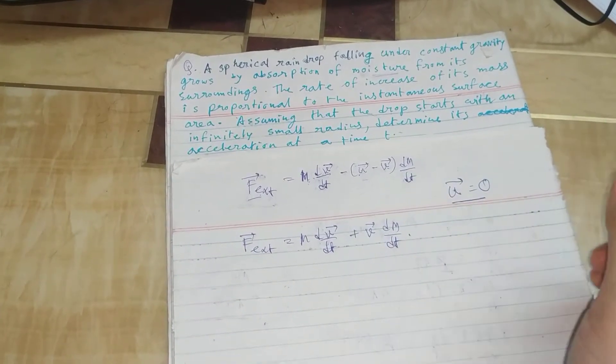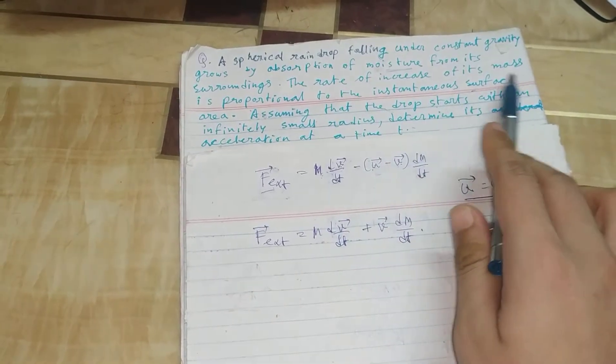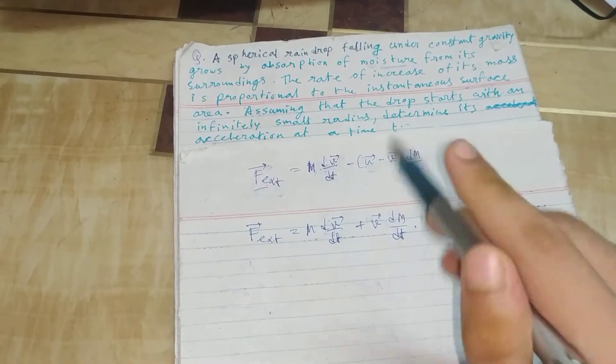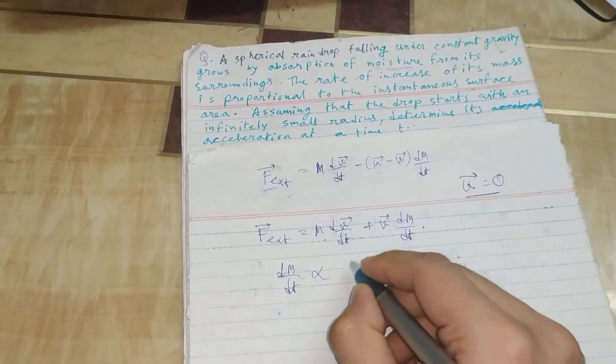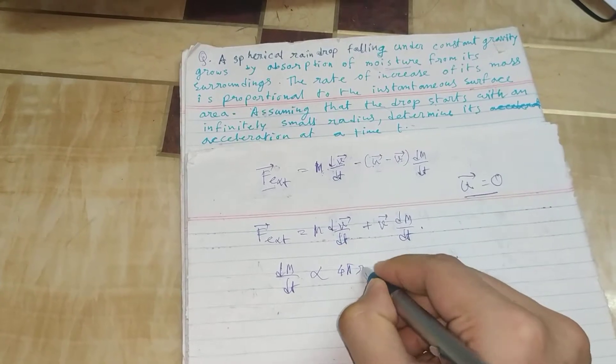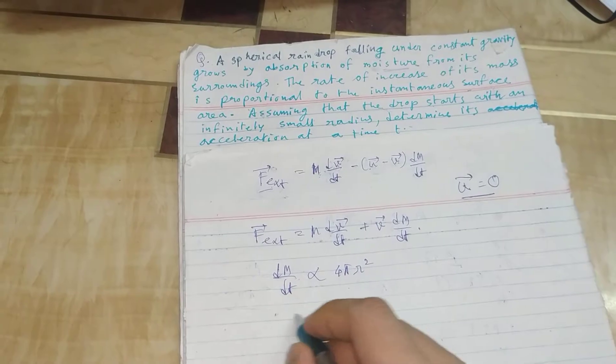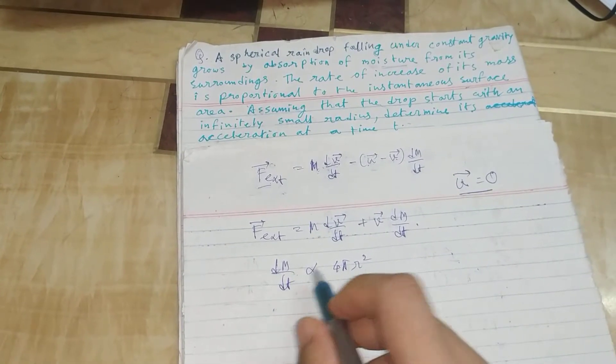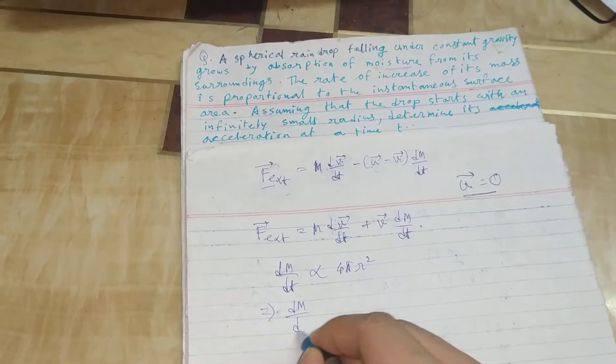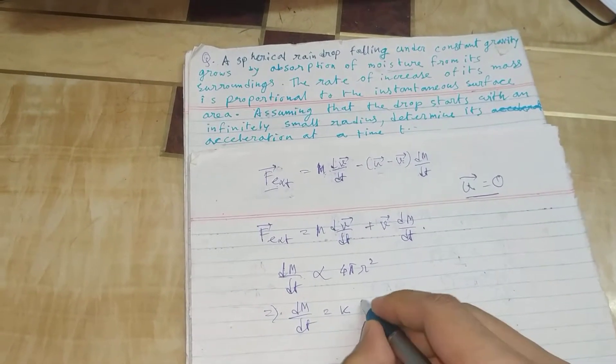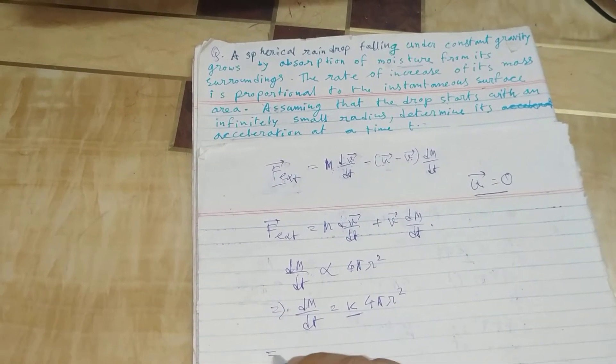Now from the question, the rate of increase of its mass is proportional to the instantaneous surface area. So we can write dm/dt = K × 4πR², where K is the proportionality constant.